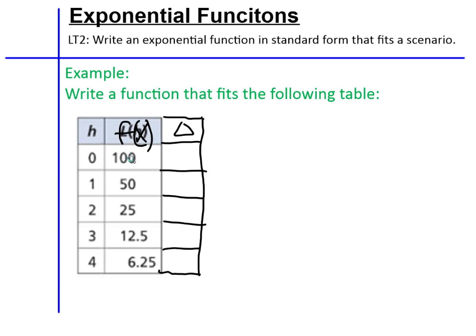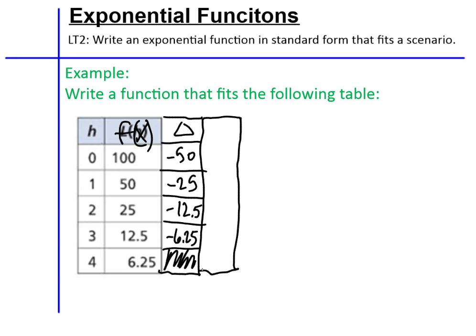What plus 100 equals 50? That would be negative 50. What plus 50 equals 25? Negative 25. What plus 25 equals 12.5? Negative 12.5 — and so on. The difference is not common. With quadratics, we drew a second difference column to try to find a common delta.